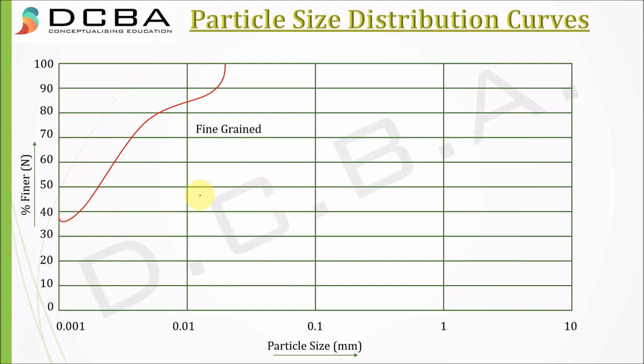Next is fine grained soil. It is termed as fine grained soil because it starts from a very lower value. Let's say this is 0.04 mm. There is no particle greater than 0.04 mm. The particles in that soil start from 0.04 mm and lesser onwards. Even after 0.001 mm there is no other particle, so 40% is finer than this.